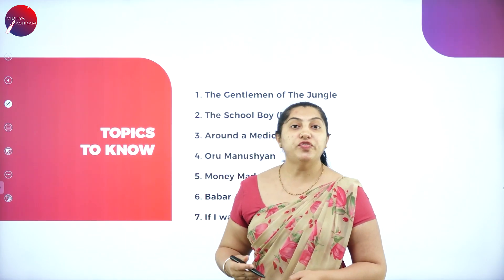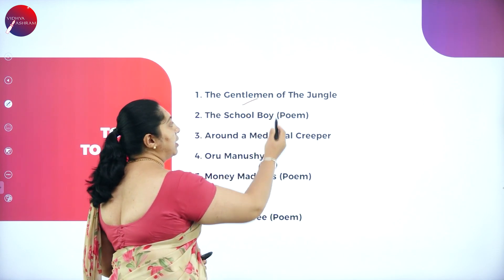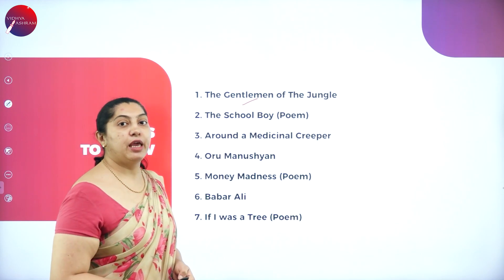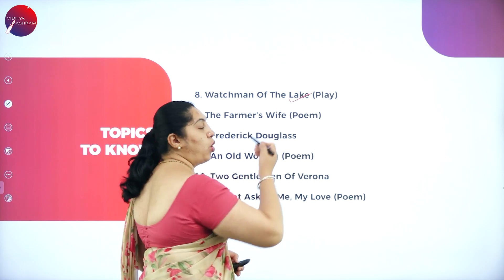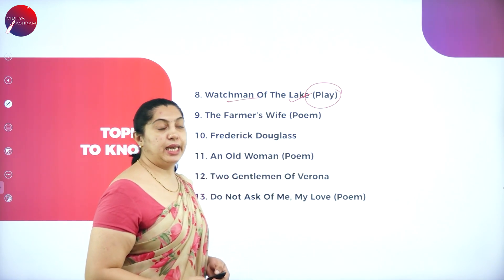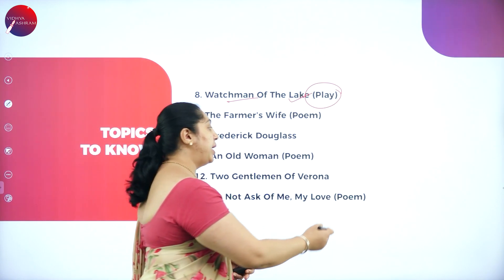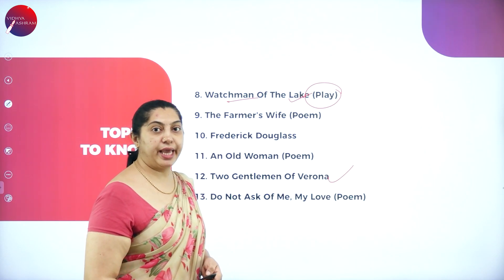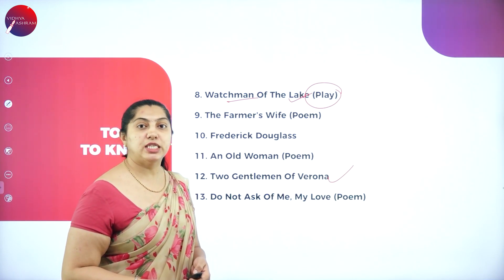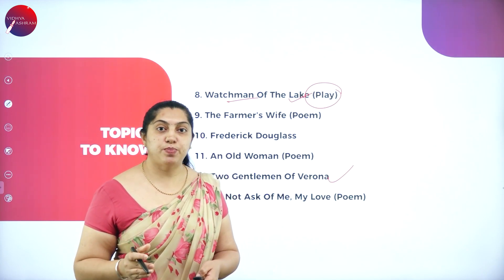In your Reflection textbook, you have 13 chapters — six prose pieces and one play. The chapters are: The Gentleman of the Jungle, The School Boy, Around the Medicinal Creeper, Oru Manushin, Money Madness, Babar Ali, If I Was a Tree, Watchman of the Lake (which is the play), The Farmer's Wife, Frederick Douglas, An Old Woman, Two Gentlemen of Verona, and Do Not Ask of Me My Love.